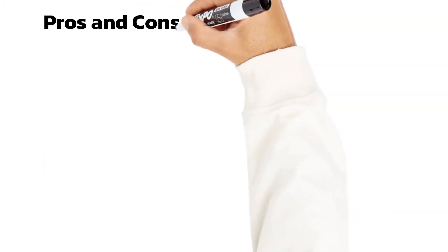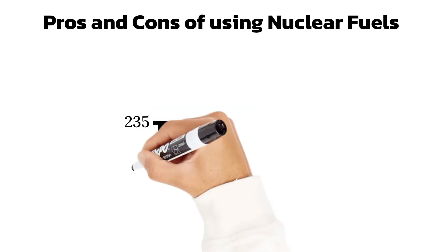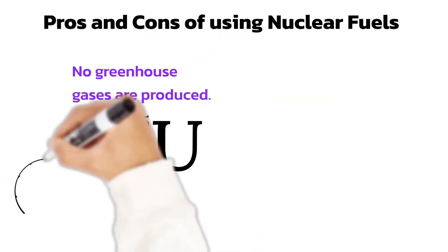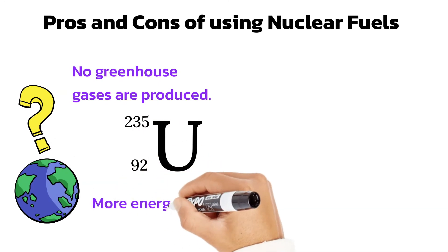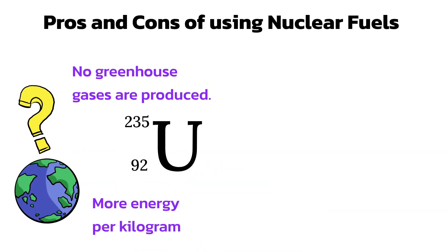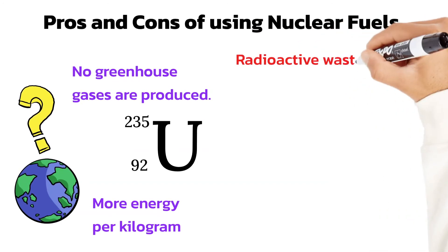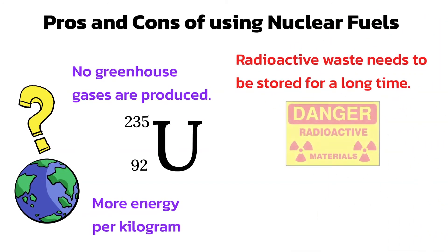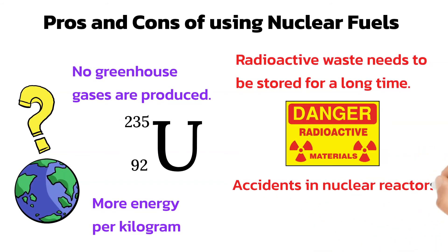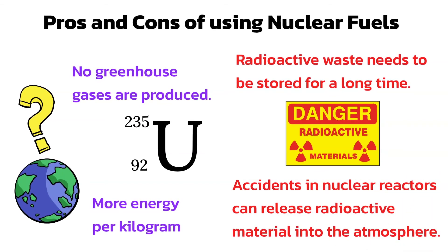The positives of using nuclear fuels like uranium and plutonium are that no greenhouse gases are produced unlike with fossil fuels, and they produce much more energy for each kilogram of fuel compared to fossil fuels. The negatives are that used fuel rods from power stations contain radioactive waste which needs to be stored safely for many years. Although nuclear reactors are safe in normal use, accidents such as in Chernobyl are dangerous because radioactive material can affect the environment for many years.